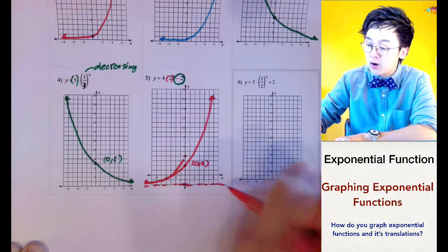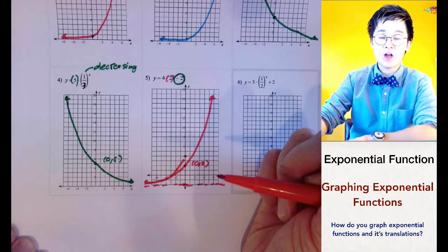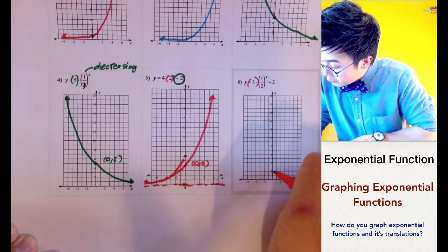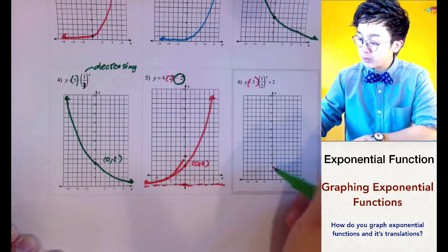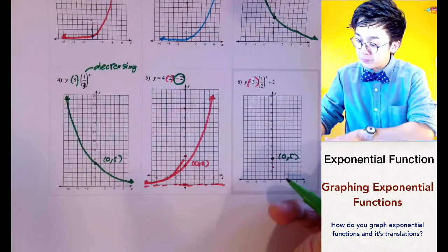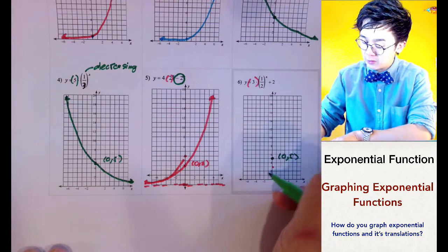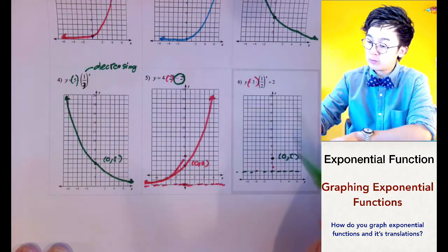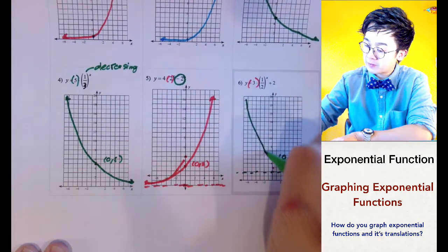For problem number 3, the y-intercept would normally be at 3, but since we have a positive 2 constant being added to the function, the new y-intercept becomes 3 plus 2, giving us (0, 5). The horizontal asymptote, which would normally be at y equals 0, shifts up 2 units. The behavior of the graph is decreasing because a is less than 1, so the function graphs accordingly.